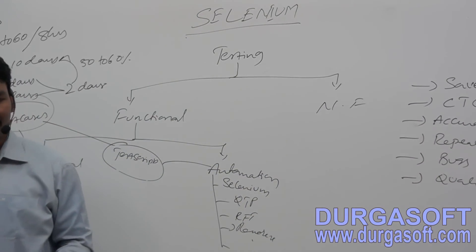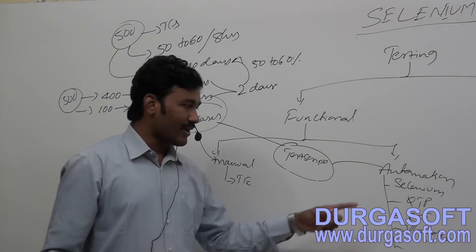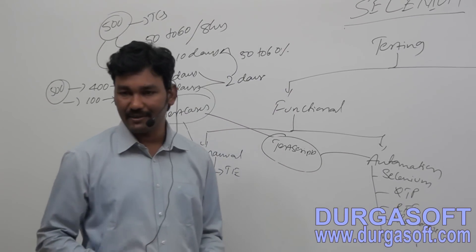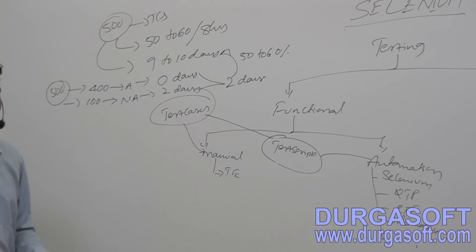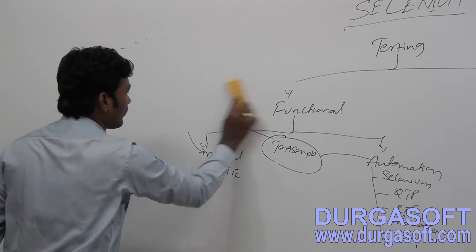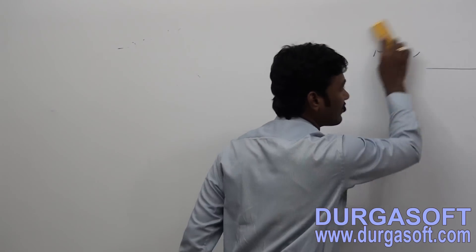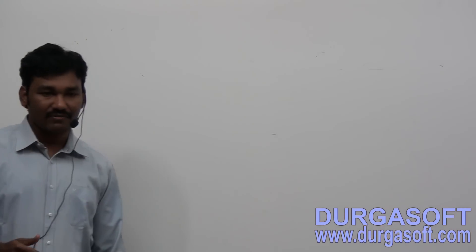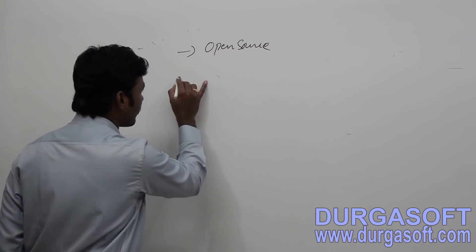If you take any automation tool, it will offer all these features. Then why Selenium? Why are you all planning to learn Selenium? Now we will compare Selenium with QTP. Nowadays people are converting from QTP to Selenium — why? Majority of the companies are using Selenium nowadays. What is the difference between Selenium and QTP, and why are majority of companies converting from QTP to Selenium? The first advantage is open source — meaning absolutely free.